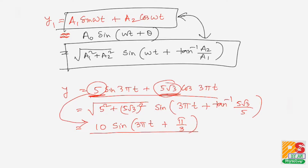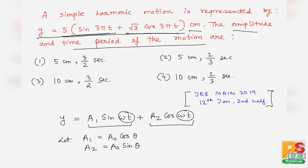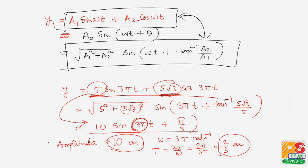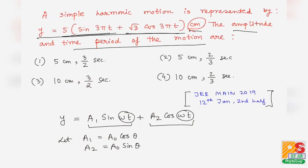Therefore, the amplitude is 10 centimeters. For the time period, the coefficient of t is ω = 3π rad/s. The time period T = 2π/ω = 2π/3π = 2/3 seconds. So the amplitude is 10 cm and the time period is 2/3 s. Looking at the options, option 4 is correct.